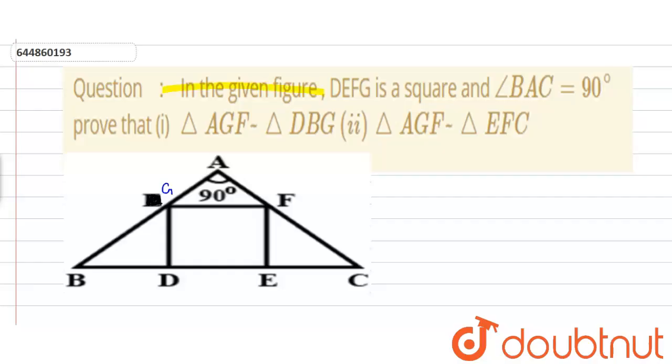The question is: in the given figure DEFG is a square and angle BAC is equal to 90 degrees.